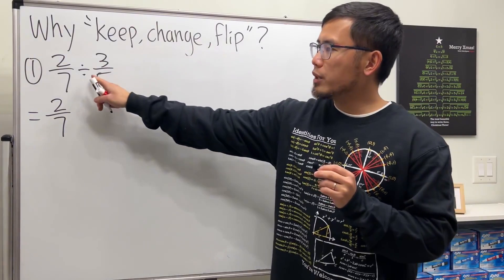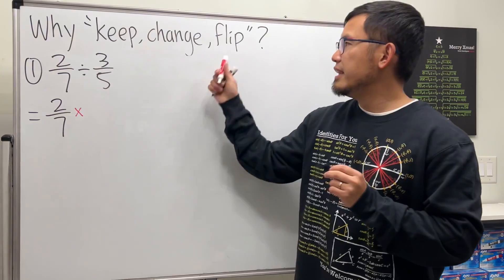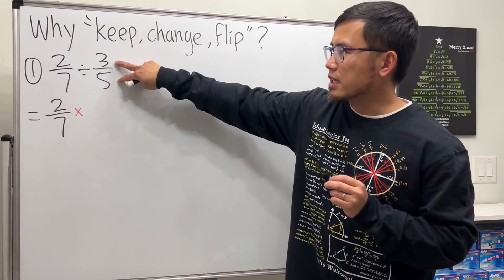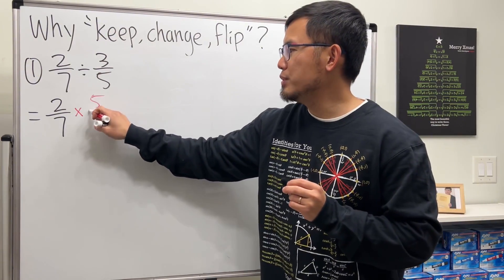Change means we are going to change the division to a multiplication. And then flip means we are going to flip the second fraction. So instead of 3 over 5, we will have 5 over 3.